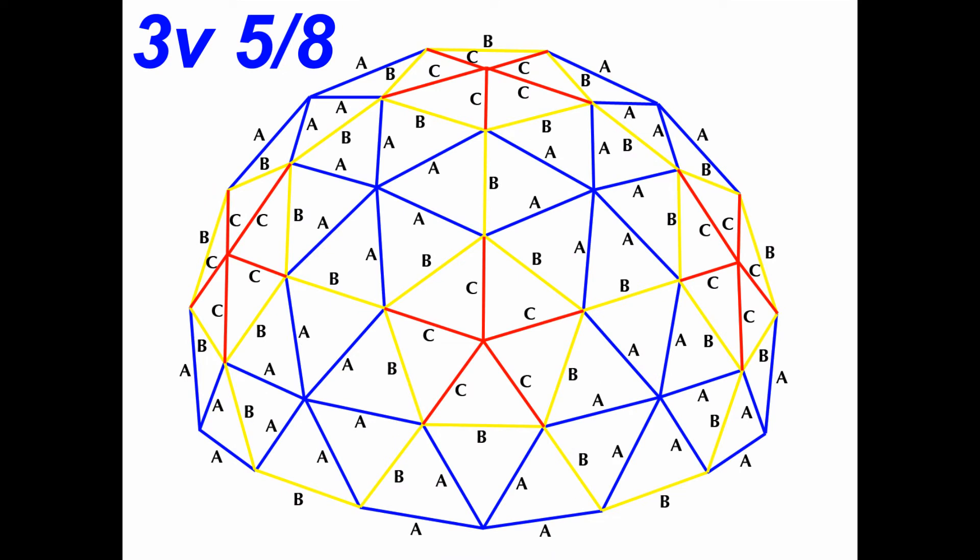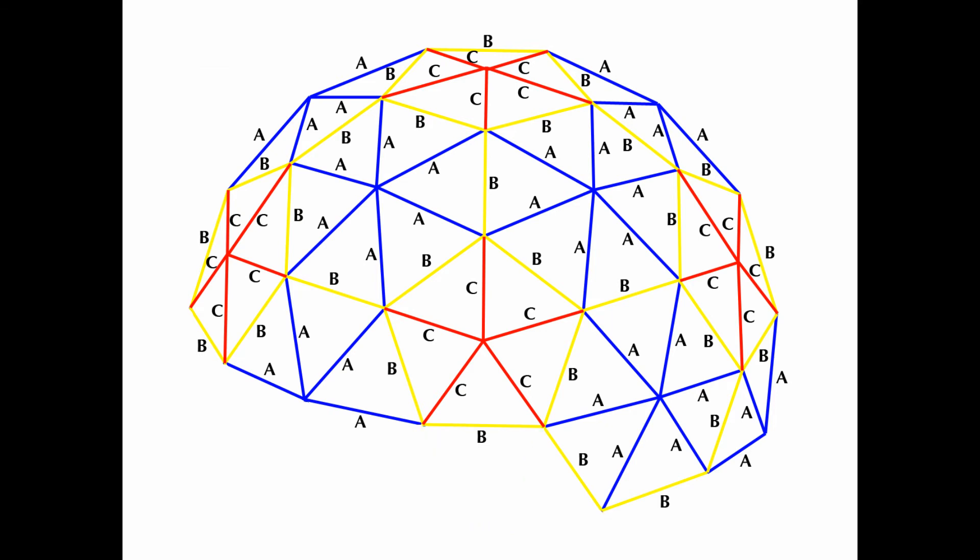So, if you remove this vertical section from the 3 frequency dome, it becomes a 3 eighths dome. The only difference between the 3 eighths and the 5 eighths domes is this vertical section of struts.